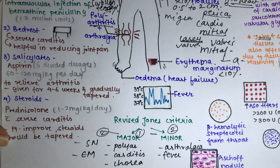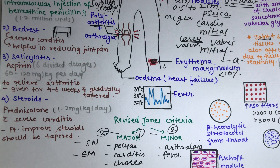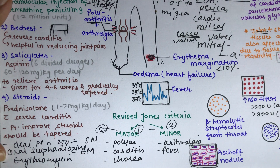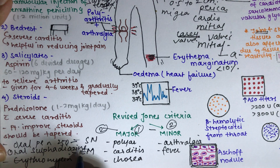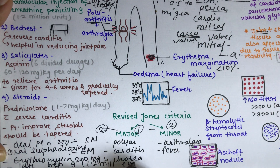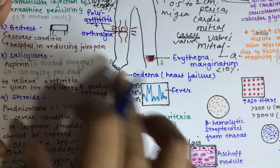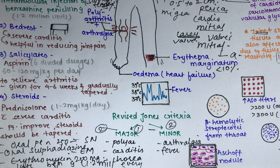Secondary prevention is important to prevent recurrence. Subsequent pharyngeal Group A streptococcal infection is prevented by: oral penicillin V 250 mg twice daily, or oral sulfadiazine 1 gram daily, or erythromycin 250 mg twice daily, or intramuscular benzathine penicillin G 1.2 million units every three weeks. These drugs are given for at least five years after treatment of ARF. This is commonly asked in MCQs and vivas.